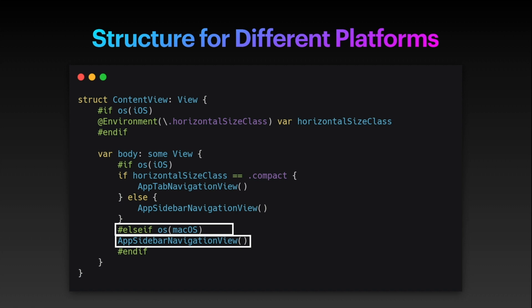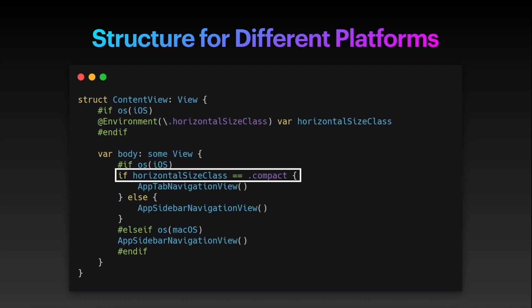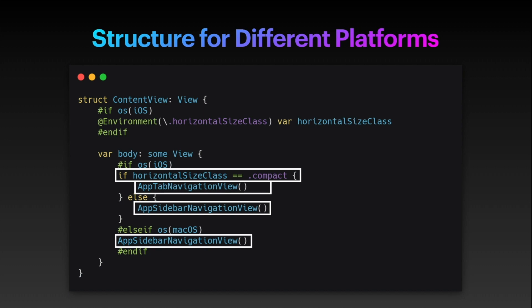You can also separate your UI to look different on iOS versus iPadOS using the same structure, and reuse things across iPadOS and macOS. For example, if you want a sidebar list on both iPad and Mac, but a tab bar on iPhone, you can use the horizontal size class to check whether you're on a compact device. If you're on a compact device you display the iOS tab bar UI; otherwise you display the sidebar navigation.